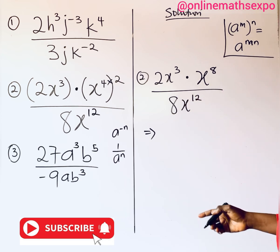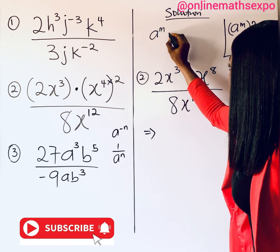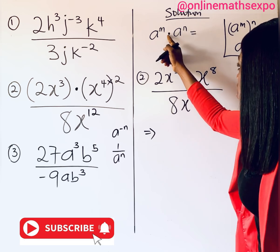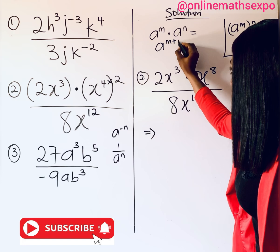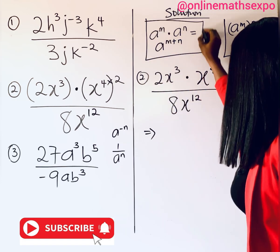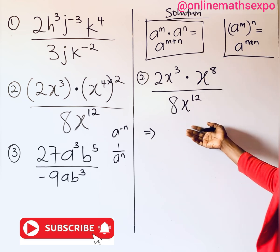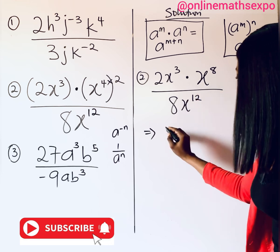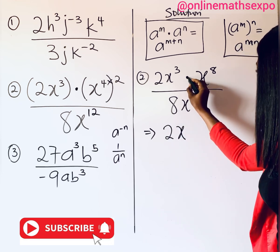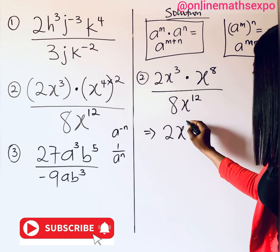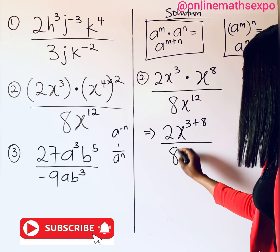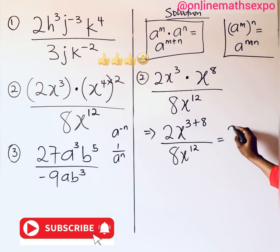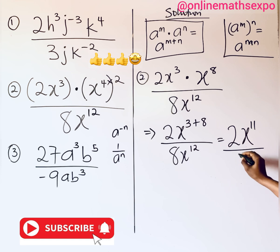Now apply the multiplication rule: a to the power of m times a to the power of n — when multiplying with the same base, take one base and add the exponents. Here, 2x cubed times x to the power of 8: since the bases are the same, we add the powers: 3 plus 8 gives 11. So we have 2x to the power of 11 over 8x to the power of 12.